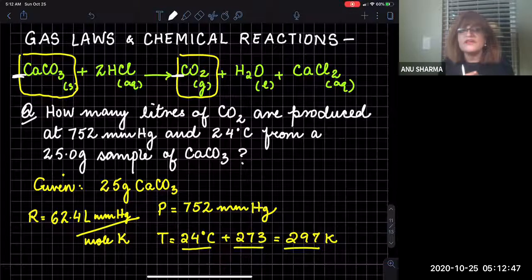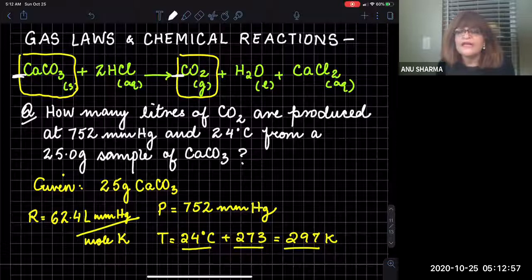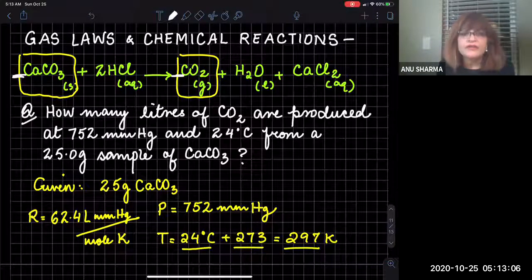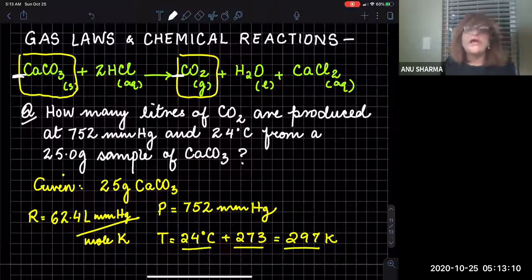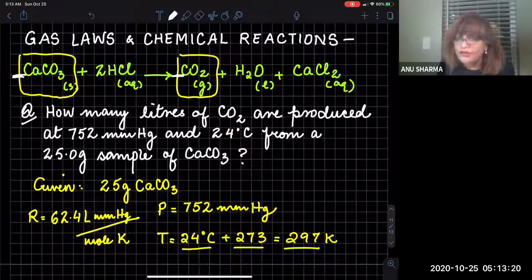Here you're given calcium carbonate, which is reacting with HCl, and this is giving you carbon dioxide, water, and calcium chloride. The two entities in question are calcium carbonate and carbon dioxide. The question is: how many liters of carbon dioxide are produced when 25 grams of calcium carbonate reacts at 752 millimeters of mercury and at 24 degrees Celsius?